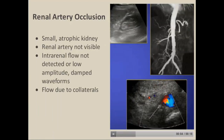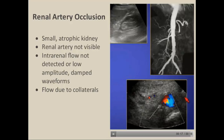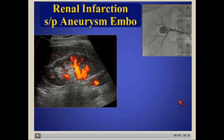For renal artery occlusion, if it's chronic you'll have a small atrophic kidney. The renal artery will not be visible on your color display, and you may see some intrarenal flow related to collaterals — that intrarenal flow will be very damped.